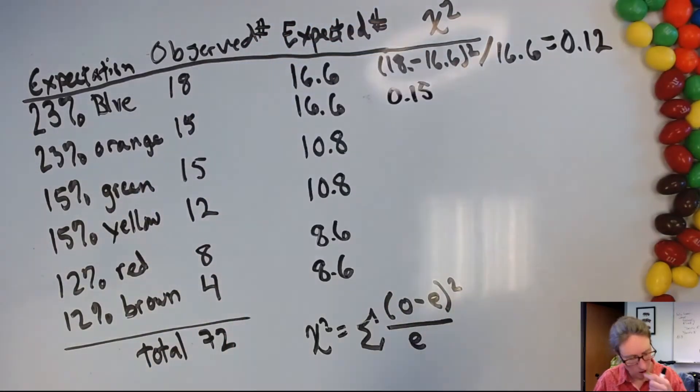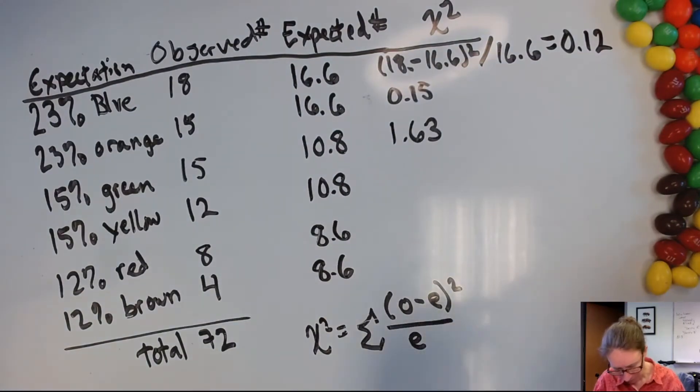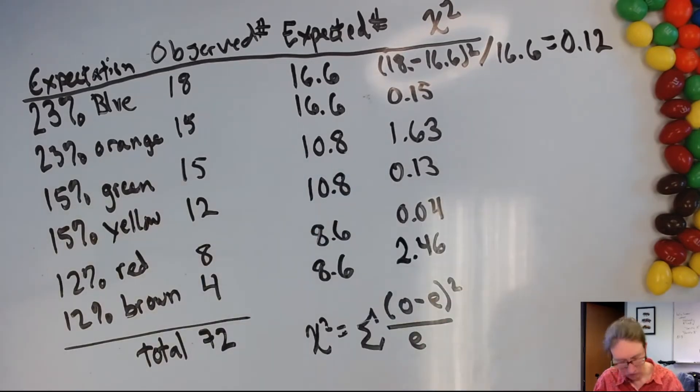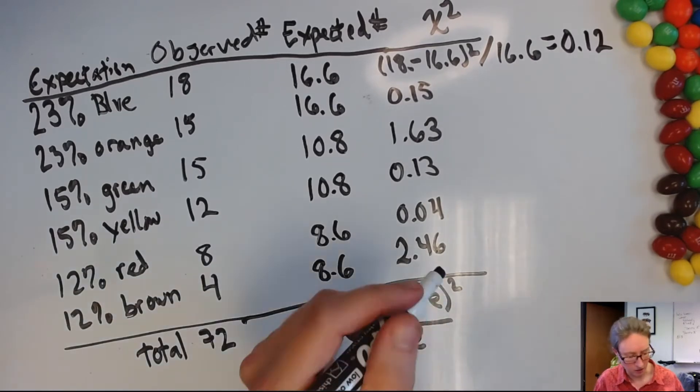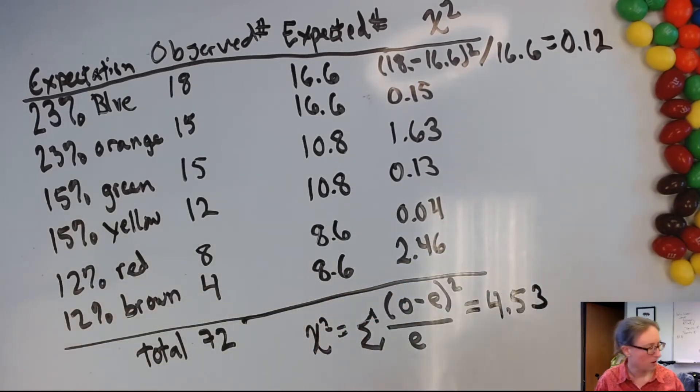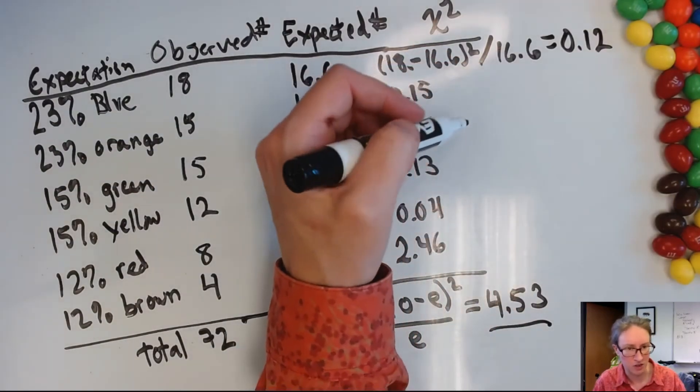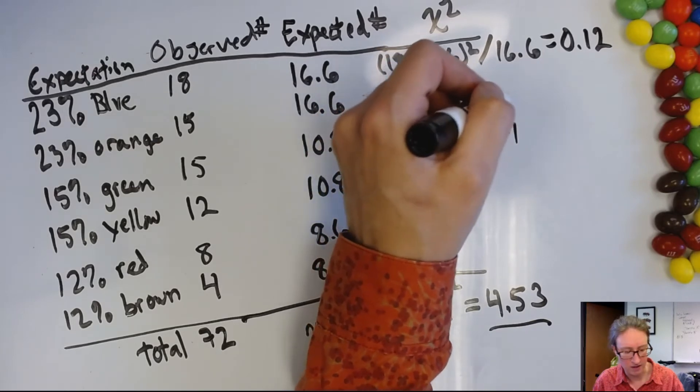And then the same for the remaining columns here. Okay, so my next step is now going to be to add all these numbers together. And I get a total of 4.53. So then for figuring out what this number means, the other piece of information that I need is my number of categories minus 1. And by convention, statisticians indicate this as n minus 1.